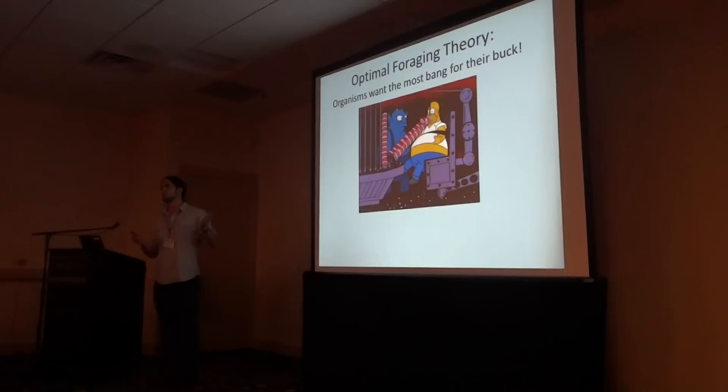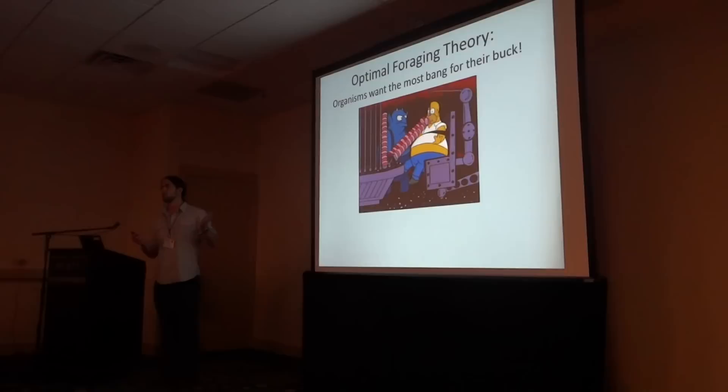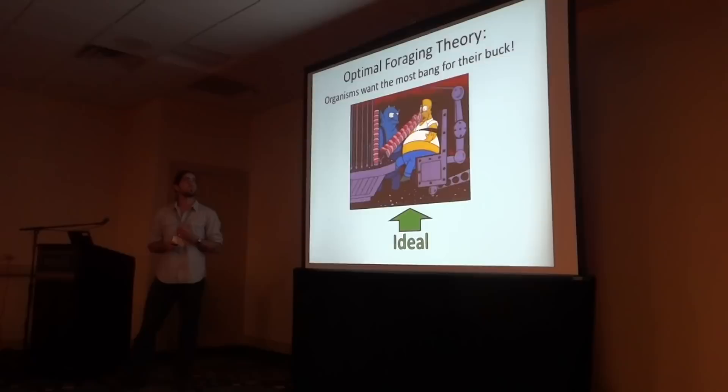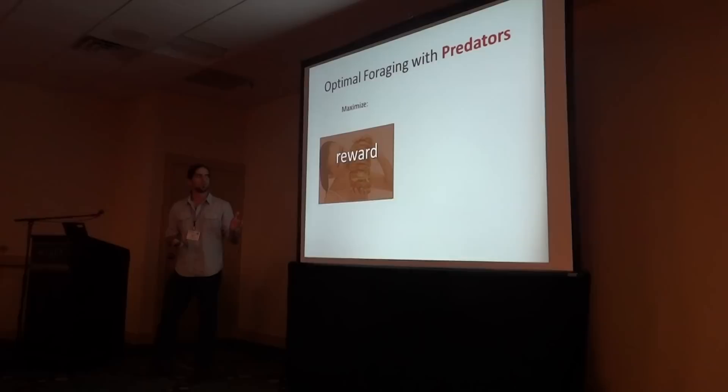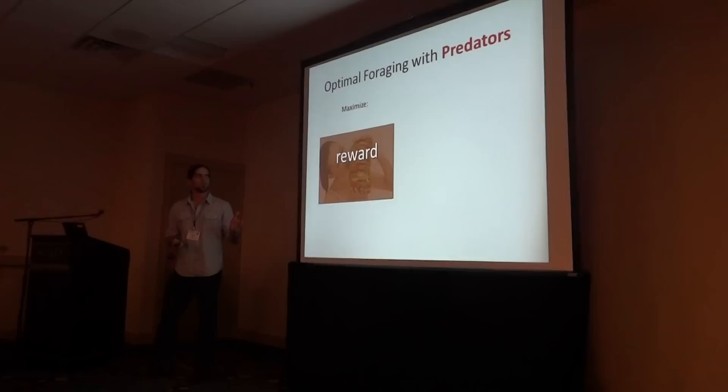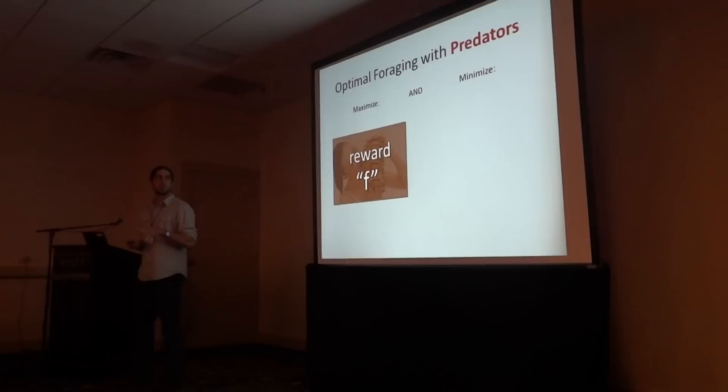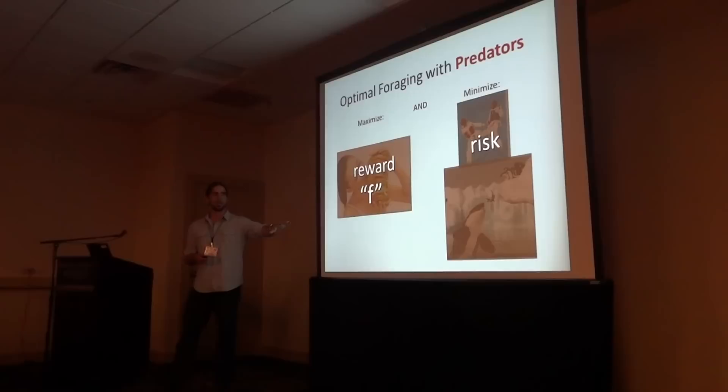From an optimal foraging perspective, being force-fed donuts while being physically restrained would actually be ideal. But scientists soon realized that optimal foraging theory was missing a key piece of the puzzle: predators. Additional theory was put forth setting the expectation that consumers want to not only maximize their foraging rate — which we'll call reward or F — but they simultaneously want to minimize their rate of serious injury or mortality, which we'll refer to as risk or mu.